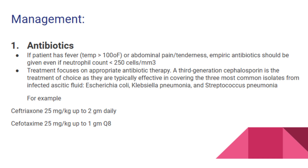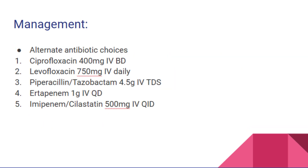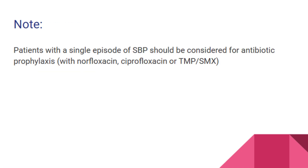A third-generation cephalosporin is the treatment of choice, as they are typically effective in covering the three most common isolates from infected ascitic fluid: Escherichia coli, Klebsiella pneumoniae, and Streptococcus pneumoniae. For example, Ceftriaxone 25 mg/kg up to 2 grams daily, or Cefotaxime 25 mg/kg up to 1 gram Q8h. Alternate antibiotic choices include Ciprofloxacin 400 mg BD, Levofloxacin 750 mg daily, Piperacillin-Tazobactam 4.5 grams TDS, Ertapenem 1 gram QD, and Imipenem-Cilastatin 500 mg Q6h. Note: Patients with a single episode of SBP should be considered for antibiotic prophylaxis with Norfloxacin, Ciprofloxacin, or TMP-SMX.